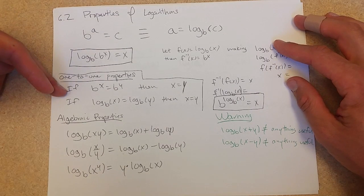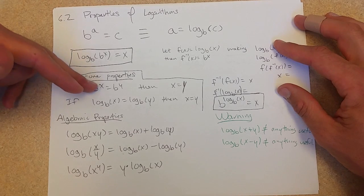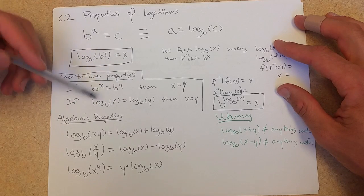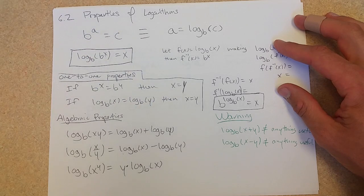Because exponential functions are one-to-one, so are logs. If you know base b to the x equals b to the y, then the exponents had to match. Likewise, if log base b of x equals log base b of y, then x has to equal y. This just comes from the one-to-one properties.